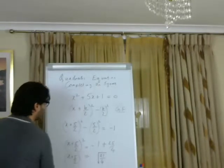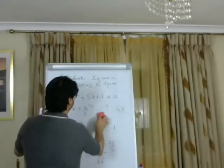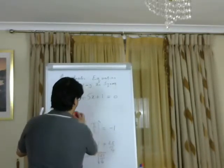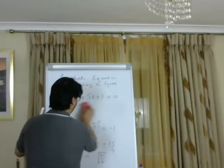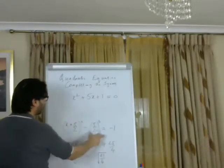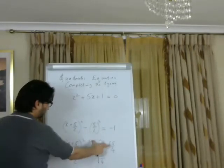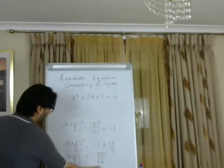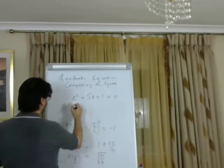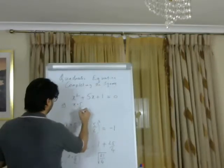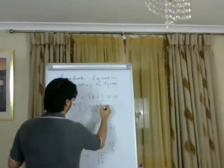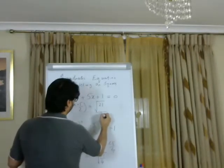Because we don't have enough space, let's bring this up here. So we have x plus 5 over 2, and on the right side we have 21 over 4 — putting 21 over 4 clearly.